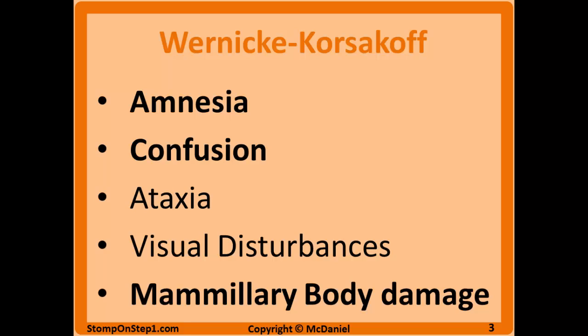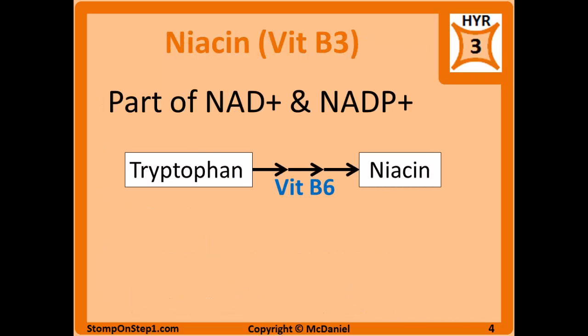Wernicke-Korsakoff characteristically affects the mammillary bodies and surrounding structures such as the third and fourth ventricle and the aqueduct. Infarcts or hemorrhages in these areas can be seen on radiologic imaging. Now we'll move on to niacin or vitamin B3, which is part of NAD and carries electrons in redox reactions. Vitamin B3 is made from tryptophan using a vitamin B6 cofactor. Therefore, niacin deficiency can result from vitamin B6 deficiency or tryptophan deficiency, such as in Hartnup disease and carcinoid syndrome.